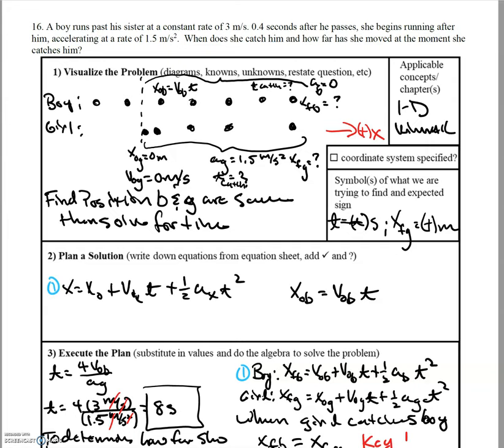All right, so moving on to the last couple problems. We've got 16, a boy runs past his sister at a constant rate of three meters per second. 0.4 seconds after he passes, she begins running after him, accelerating at a rate of 1.5 meters per second squared. When does she catch him and how far has she moved the moment she catches him?